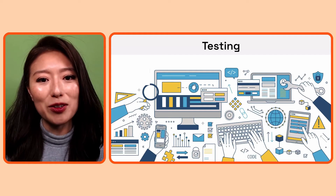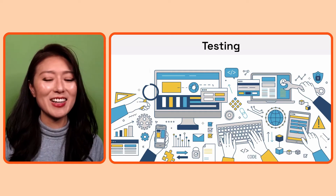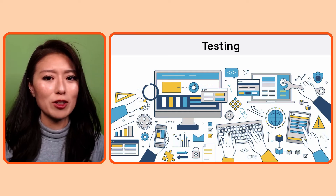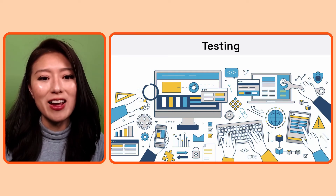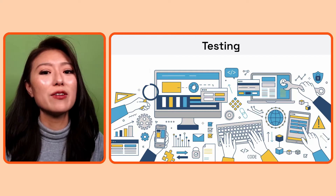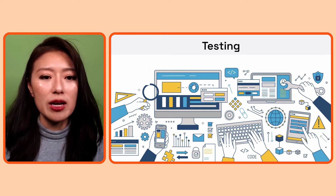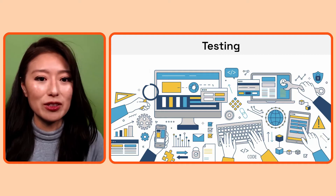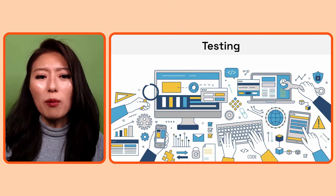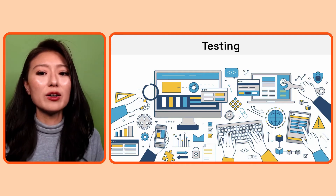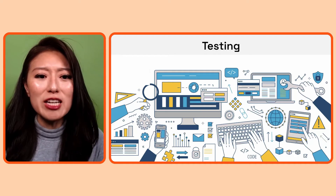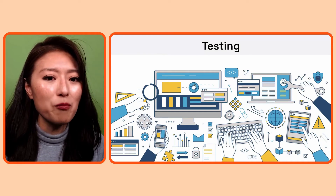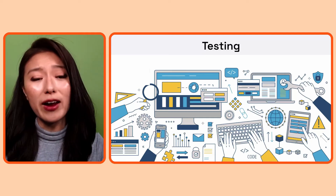Another important factor in this process is testing. This step ensures that your software works as expected, that there are no bugs in the application, and that the new changes do not affect the previous functionality of the app. Similar to security, testing used to be done towards the end of the delivery process, so problems or bugs in the code wouldn't be caught until much later. The teams weren't able to proactively address these issues earlier in the cycle, which introduced further delay.